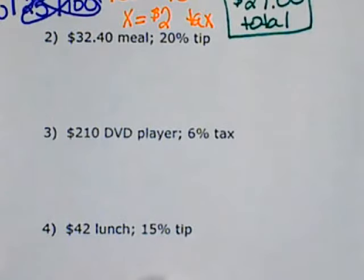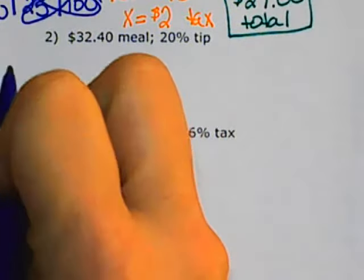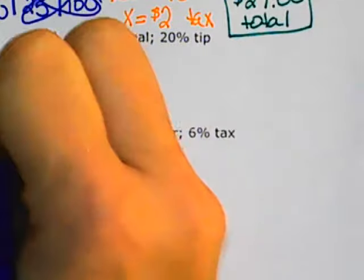Number 2, finding the total cost of a meal that costs $32.40 with a 20% tip. We will set up our proportional table.